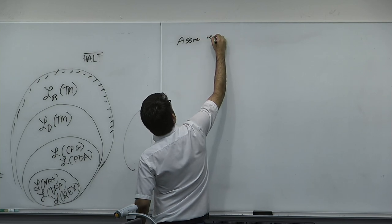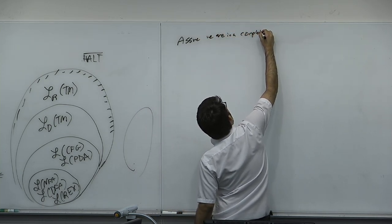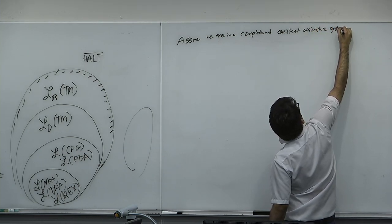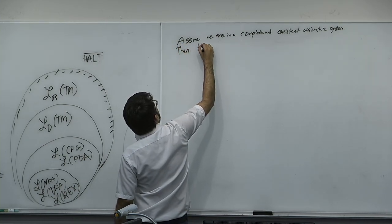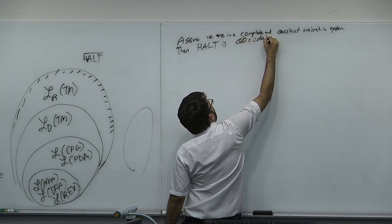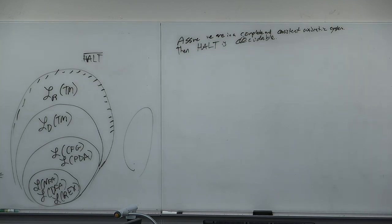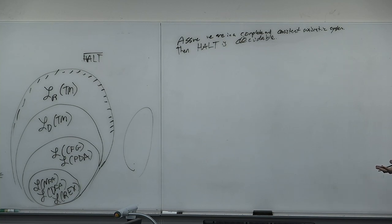There are deeper connections between Gödel Incompleteness and the halting problem. Here's a weaker form: assume we are in a complete and consistent axiomatic system. Then HALT is decidable. A complete system is one where all that is true is provable; a consistent system has no contradictions—every statement is either true or false but not both. Of course Gödel says such a system can't exist. But if we assume we're in one, HALT is decidable. There's a connection between the consistency and completeness of a system and the existence of undecidable problems.